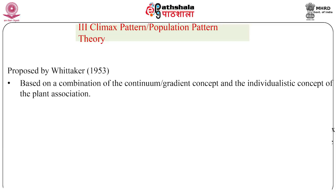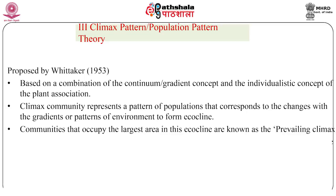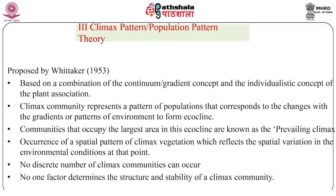Any change in the environment will result in a mosaic of climax vegetation. The climax community represents a pattern of populations that corresponds to changes with the gradients or patterns of the environment to form an ecocline. Communities that occupy the largest area in the ecocline are known as the prevailing climax or climatic climax. This theory recognizes a spatial pattern of climax vegetation reflecting spatial variation in environmental conditions. There is thus no discrete number of climax communities, and no one factor determines the structure and stability of a climax community.